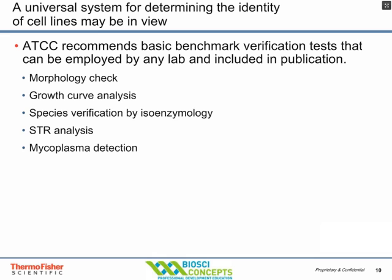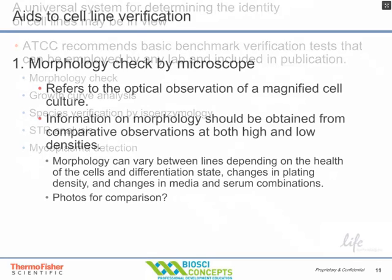Authentication of a cell line is the process by which a cell line's identity is verified and the cells have been shown to be free of other cell lines or microbial or mycoplasmic contamination. ATCC is now recommending basic benchmark verification tests that can be employed in any lab, including morphological checks, growth curve analysis, species verification, tandem repeat analysis, and mycoplasma detection. These will be required to publish in good journals in the near future.